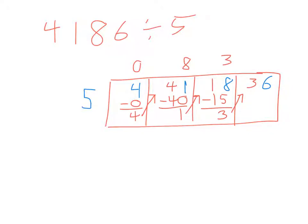Divide, multiply, subtract, bring down. 5 goes into 36 seven times. Seven times 5 is 35. 36 minus 35 gives me 1. We are finished and our remainder is 1.